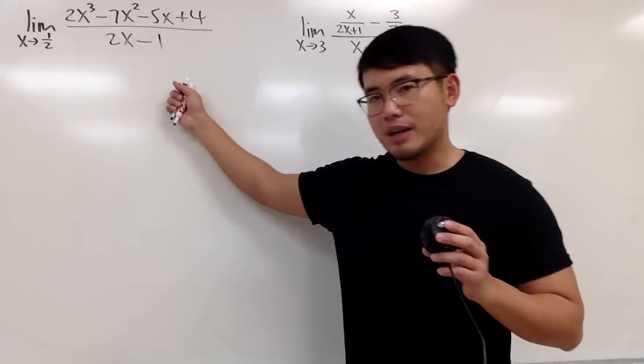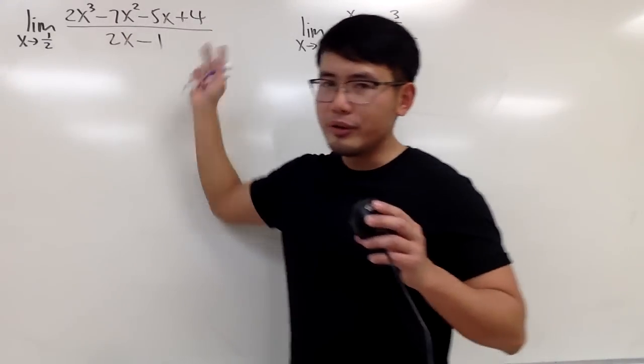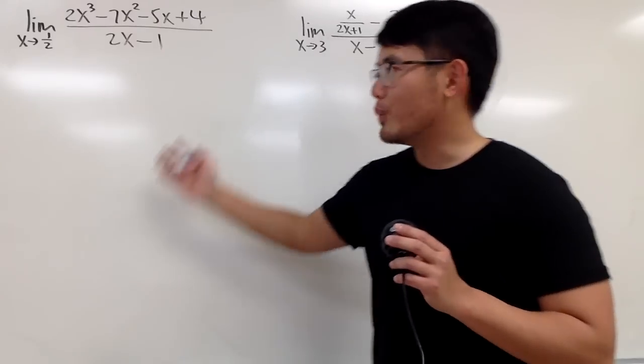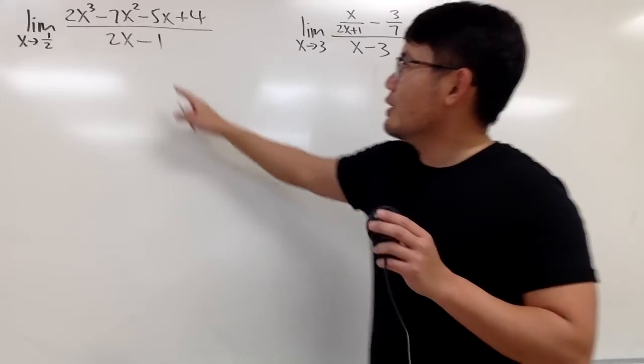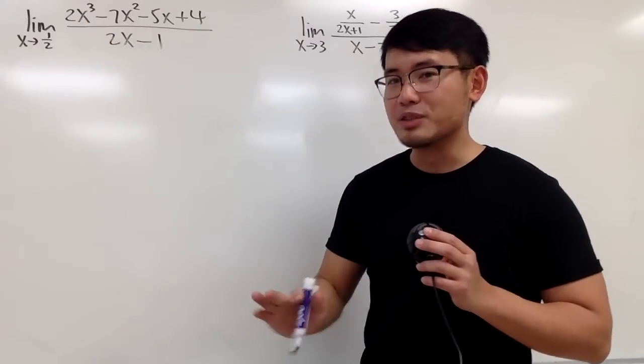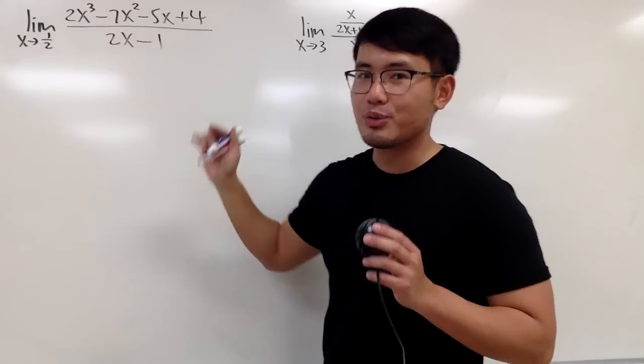Okay, for the first one, if you plug in 1/2 into all the x, yes, you guessed it, you end up with 0 over 0. So we have to do more work. Well, it's not easy to factor this expression on the top. It's okay, because we can just do polynomial divisions right here.